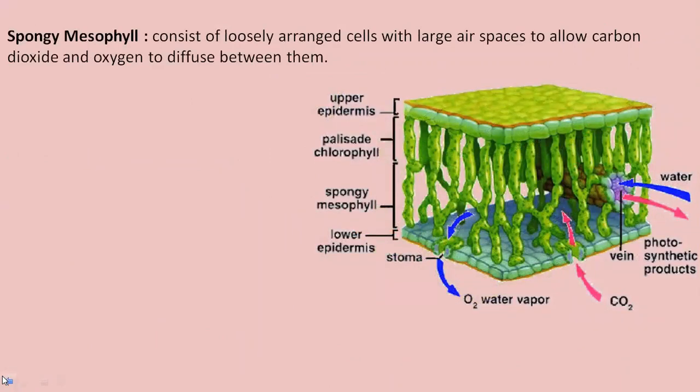The air spaces give these cells a large surface area to maximize diffusion — carbon dioxide moves into the cells and oxygen moves out. There is also a continuous supply of water and minerals to every leaf cell through the extensive network of veins within the leaf lamina.